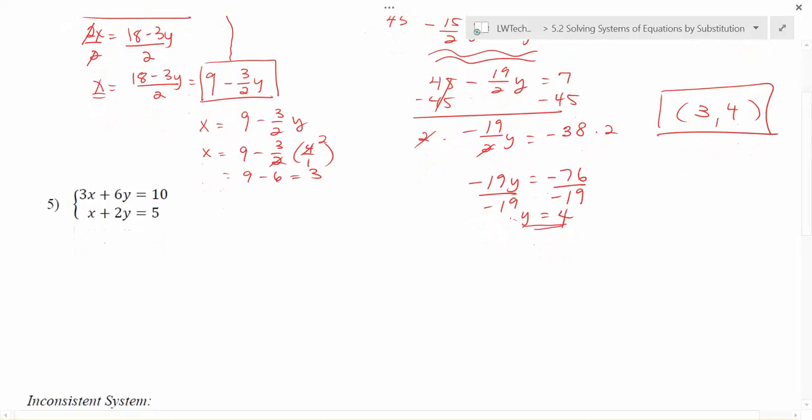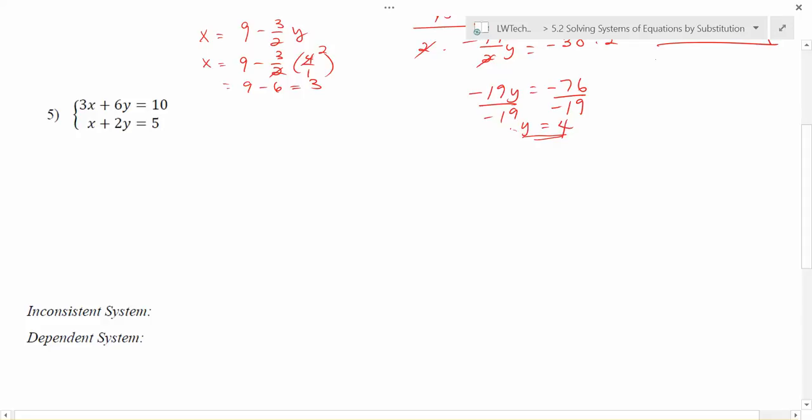One last example here of some linear problems in number 5. Do notice that here in the second equation, I do have an x that has no number in front of it, so I'm going to go ahead and solve for x in the second equation for this one. I'll subtract 2y from each side first. That gives me x equals negative 2y plus 5. Now that the x is alone here, I can take this value and plug it in for x in the other equation up here. So when I do that, I'm going to have 3 times, instead of x, I'm going to have negative 2y plus 5, then plus 6y equals 10.